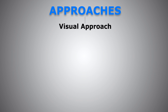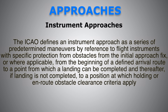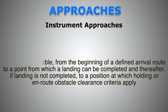Now let's look at instrument approaches. The ICAO defines an instrument approach as a series of predetermined maneuvers by reference to flight instruments in the cockpit, with specific protection from obstacles from the initial approach fix, or where applicable, from the beginning of a defined arrival route, to a point from which a landing can be completed, and thereafter, if landing is not completed, to a point at which holding or en-route obstacle clearance criteria apply. What does all that mean? It sounds fancy, so let's break it down.